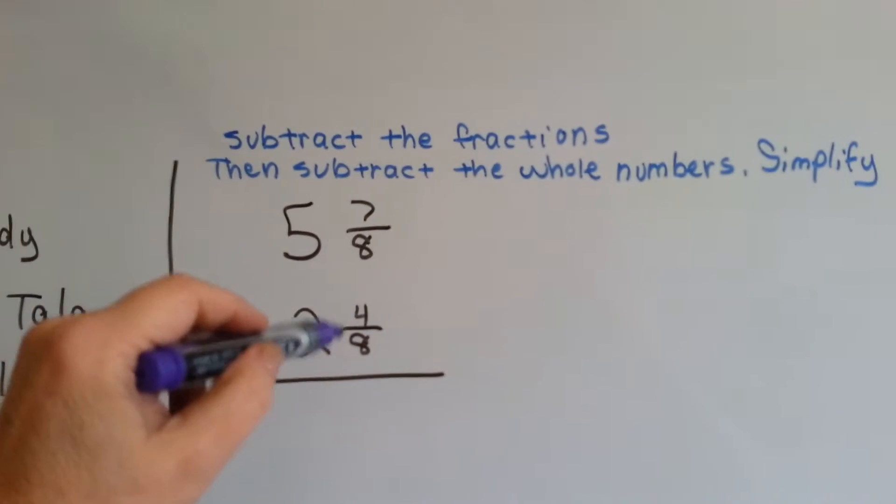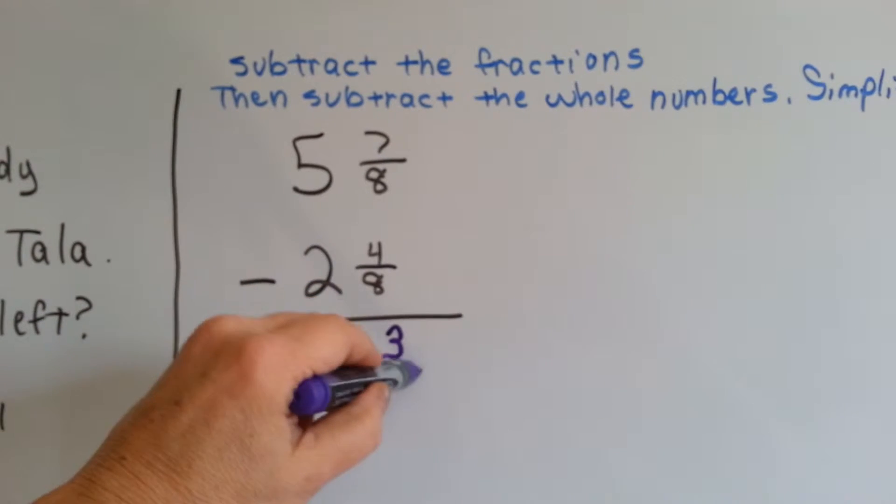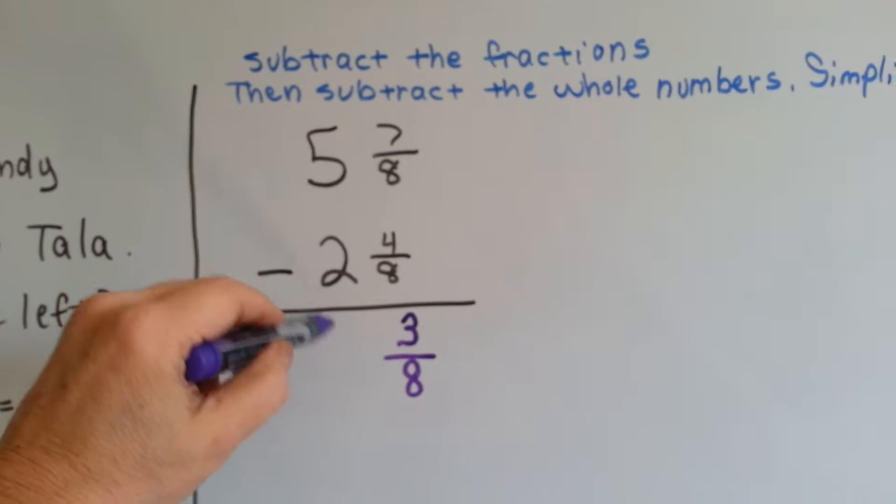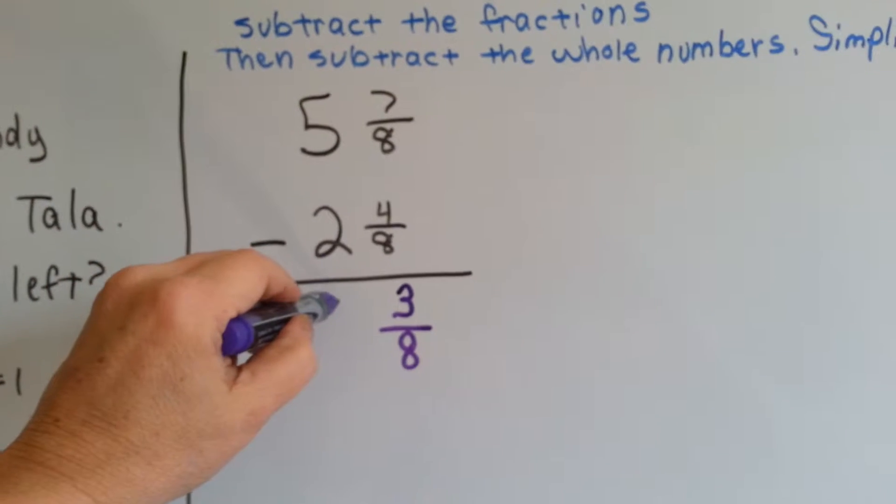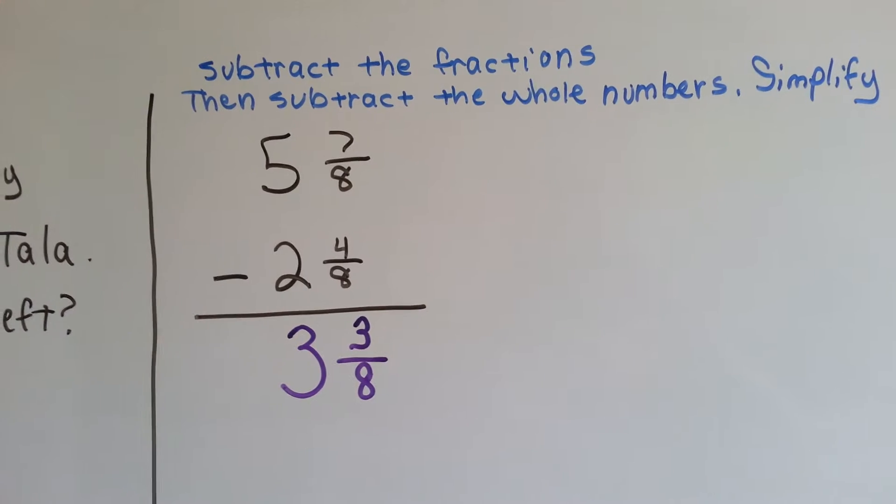7 eighths minus 4 eighths: 7 minus 4 is 3, and our denominator is eighths. Then we subtract the whole numbers, 5 minus 2 is 3. Our answer is 3 and 3 eighths. Very simple, right?